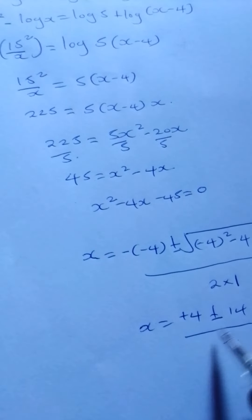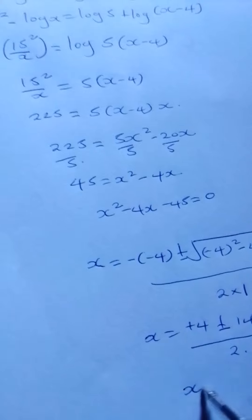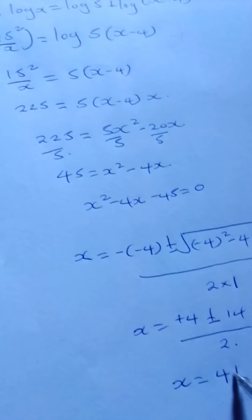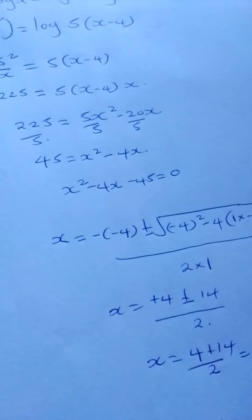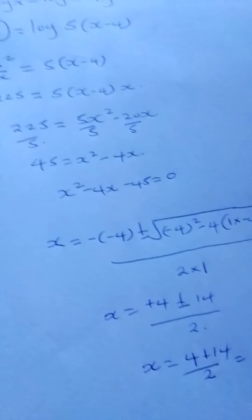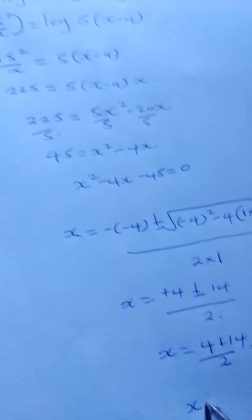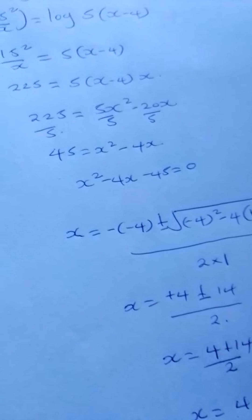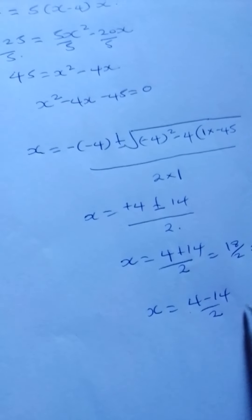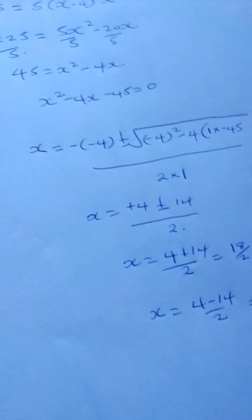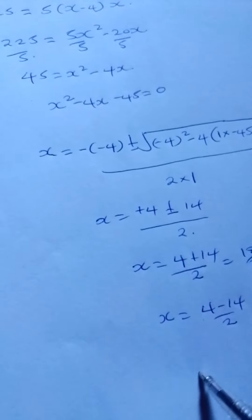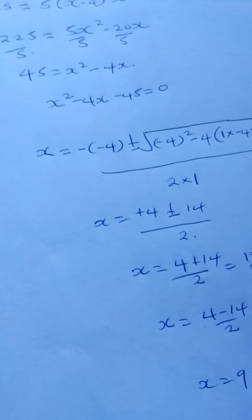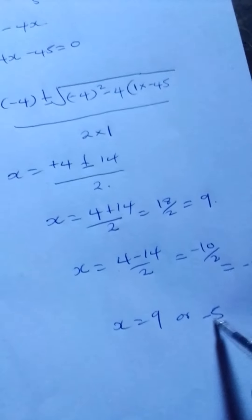With the positive sign, x = (4 + 14)/2 = 18/2 = 9. The second value will be (4 - 14)/2 = -10/2 = -5. So x = 9 or x = -5.